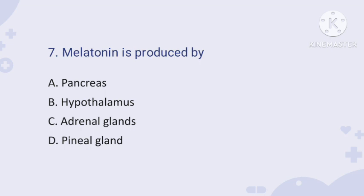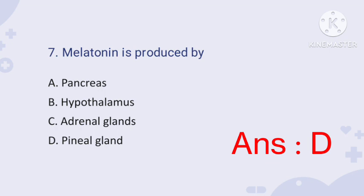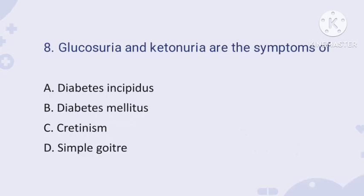Question number seven: melatonin is produced by which gland? The right answer is the pineal gland. Melatonin is the only hormone produced by the pineal gland, and it is also responsible for the circadian rhythm. So option D is the right answer — melatonin produced by the pineal gland.